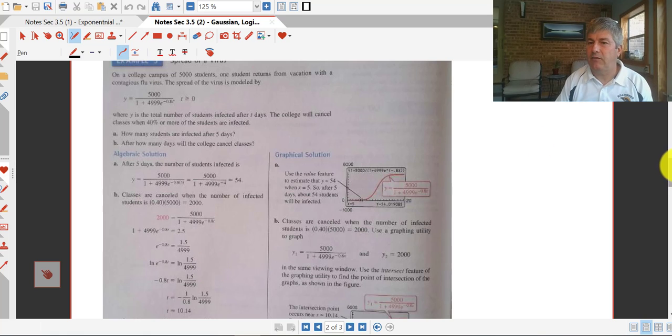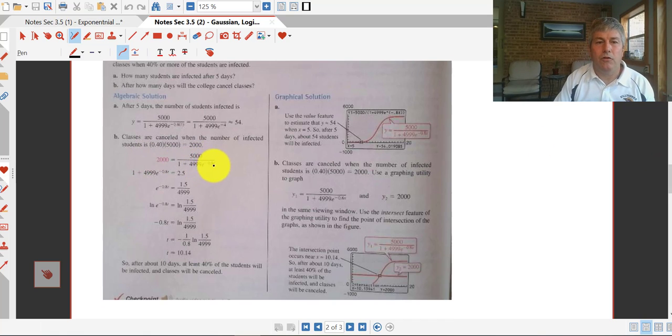So the work here is on the left-hand side of how that was done. Looks like we multiplied both sides by the denominator here on the right to get that out of the denominator. That's how we get 1 plus 4,999 e raised to the negative 0.8t equals 2.5. The 2.5 came from, they divided both sides by 2,000. So this 2.5 here really came from 5,000 divided by 2,000. So that was 5 halves or 2.5.